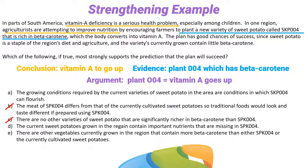D has exactly the same problem — it's the same trap. We only care if 004 increases vitamin A in the region. Do we care about other nutrients? We do not. We only care about vitamin A. E is out for the same reasons as C and D — we don't care about other vegetables. The argument is very simple and very specific: planting 004 will increase vitamin A. We don't care about anything else.